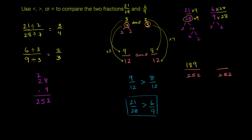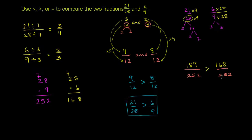6 times 28: 6 times 20 is 120, and 6 times 8 is 48, giving us 168. So now we have 189/252 and 168/252 — a common denominator. Comparing numerators, 189 is clearly greater than 168. So 189/252 is greater than 168/252, which means 21/28 is clearly greater than 6/9.